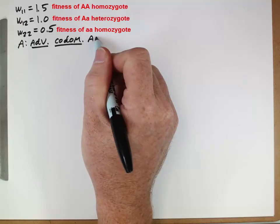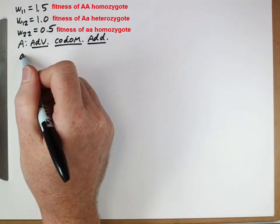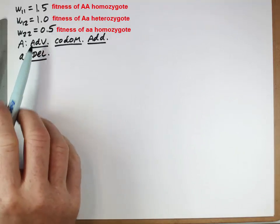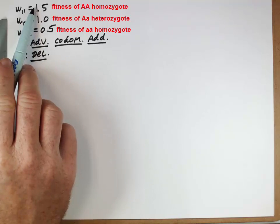Or another term for that is they're additive. And then the lowercase a allele would be deleterious, because having one or two copies of that allele results in lower fitness than if you have none.